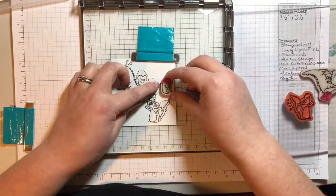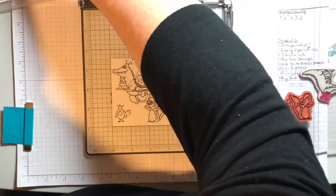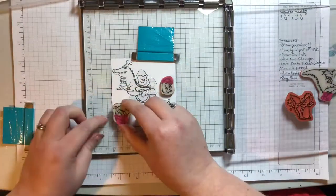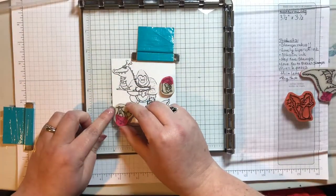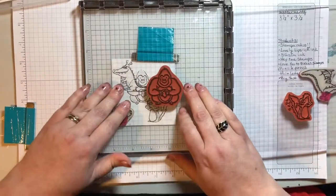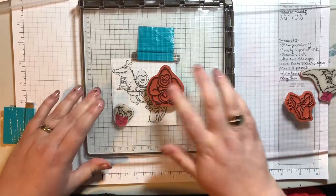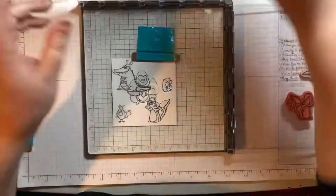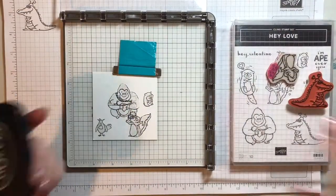And the little hamster guy and the bird can be mounted and stamped at the same time because it doesn't matter with them. So you won't be able to see the hamster, but that's okay. You don't really need to.